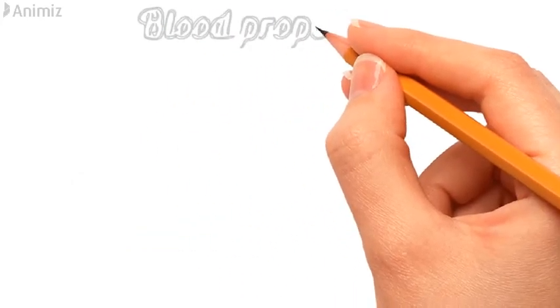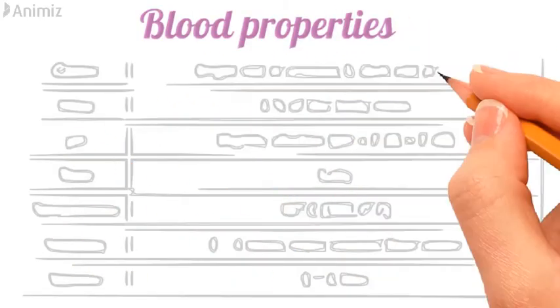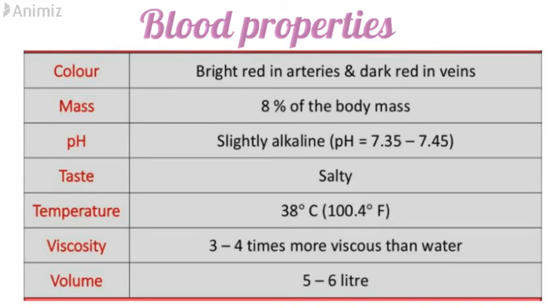Now let's have a look at some properties of blood. The color of blood in arteries is bright red and in veins it is dark red. It is 8% of the body mass of an individual. The pH of blood is slightly alkaline, from 7.3 to 7.4. It is slightly salty in taste. Its temperature is 38 degrees Celsius. It is 3 to 4 times more viscous than water, and the total volume is 5 to 6 liters in an individual.